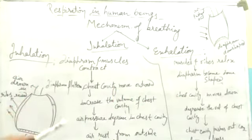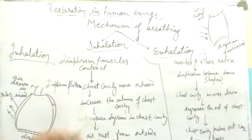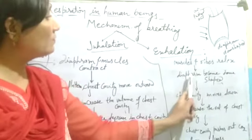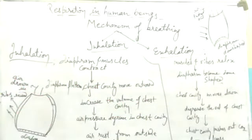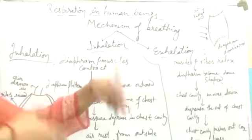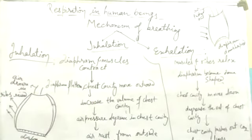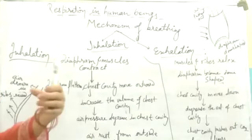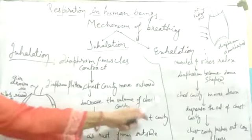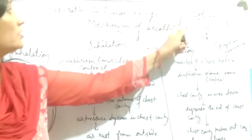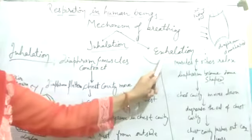During exhalation, the diaphragm and muscles relax and the diaphragm becomes dome-shaped. After relaxing, the diaphragm becomes dome-shaped and the chest cavity moves downward. The chest cavity pushes out the carbon dioxide from the lungs. That process is exhalation.